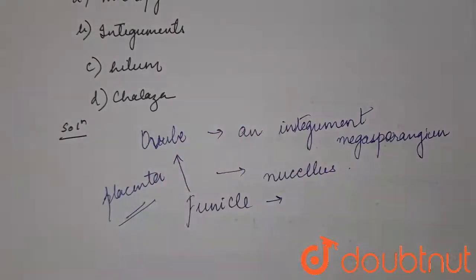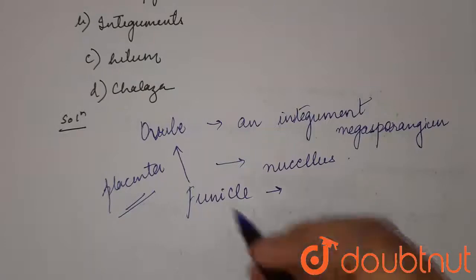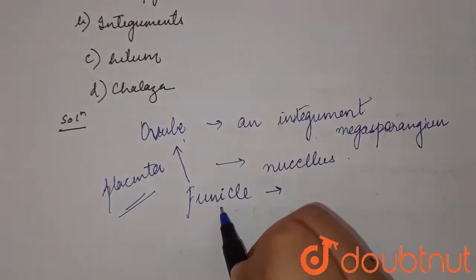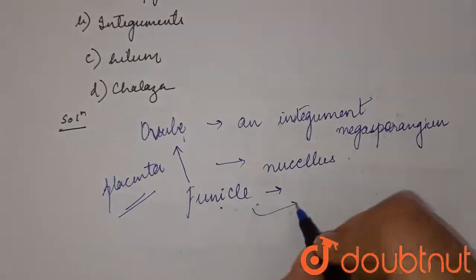Yes, plants also have placenta, and that placenta is attached to the ovule through the funicle. The region where the body of the ovule fuses with the funicle is known as the hilum.